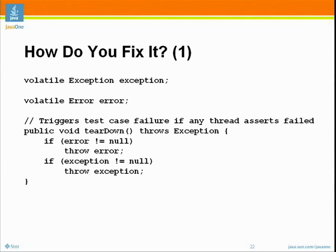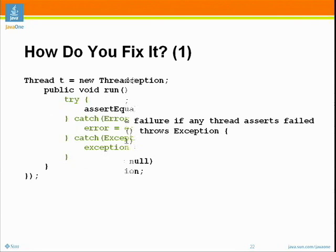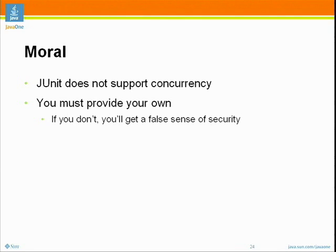Whenever you have a field which could be simultaneously touched by multiple threads, and at least one of those updates is a write, make it volatile. In this case, two people competing to store different values probably wouldn't actually impact anything, but better be safe. So basically, JUnit does not support test cases in which multiple threads have to coordinate. If you want to do that and get errors reported back from any of the threads you create, you have to roll your own or find somebody else who has already done so.